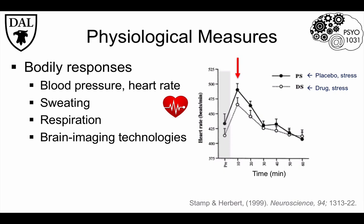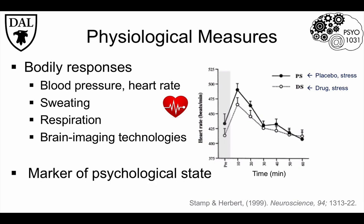Because it's not possible to ask rats about their stressful experiences, this method allows us at least to look at reactions to stress. With restraint stress, there isn't any movement to observe, so physiological measures are useful because they can serve as a marker of psychological state. These methods can also be used in humans as well.